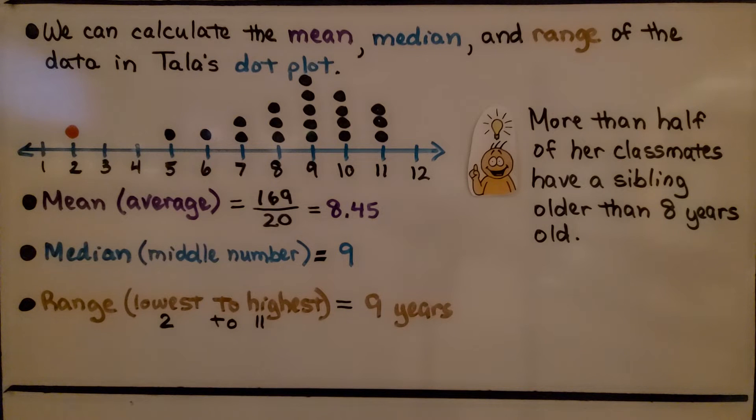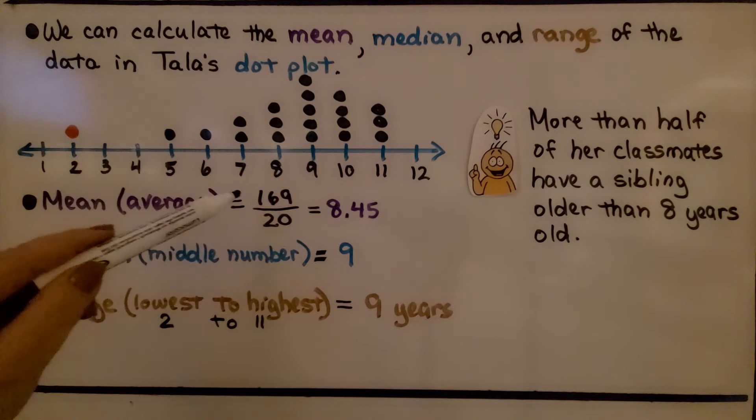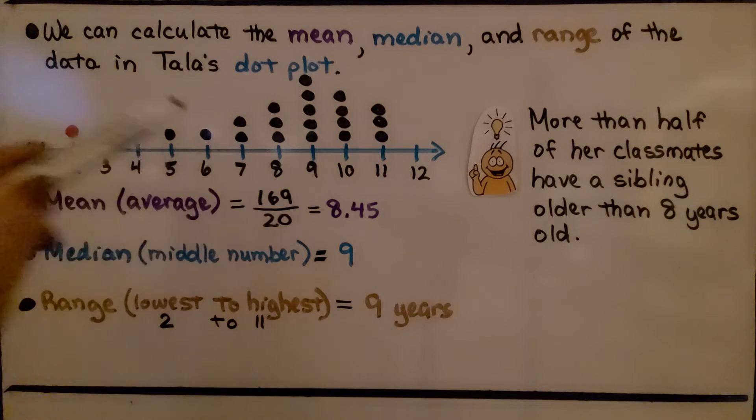We can calculate the mean, median, and range of the data in Tala's dot plot. The mean is the average. We total up all of the data values, we get 169. There's 20 dots, so that means there's 20 data values. So that's what we're going to divide it by.